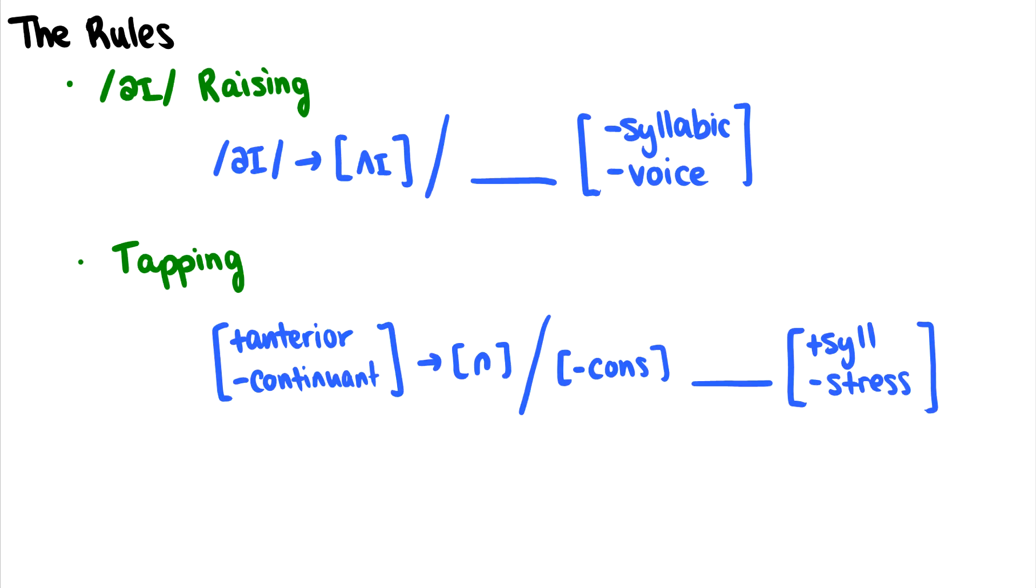The two rules I'm going to use: first is eye raising. This is Canadian raising, the difference between the word right and ride. In other words, eye raises before voiceless consonants. I know before I used minus sonorant, but this can extend to voiceless glides, nasals, and liquids as well.